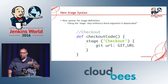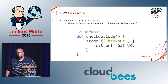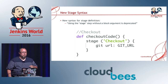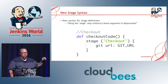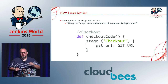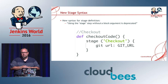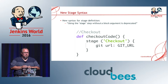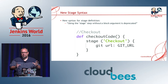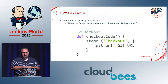When I went to the latest version, I also got the new syntax for declaring a stage. In the past, you would write just stage with quotes and the stage name. This is the new syntax for declaring a stage. If you don't use this new syntax, you'll get a message in your log that says the syntax for stage has been deprecated, meaning you should go fix it. So I figured I'd fix it before I let anybody see it in my logs.